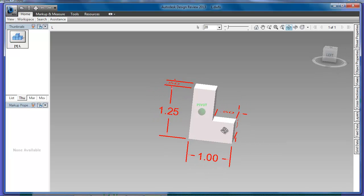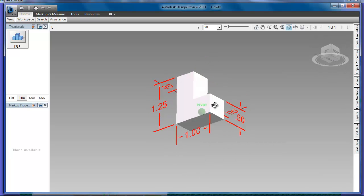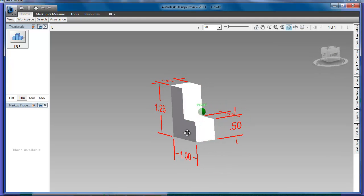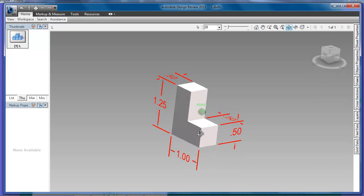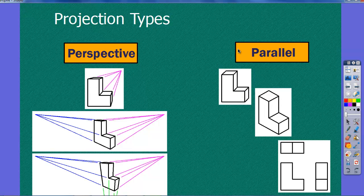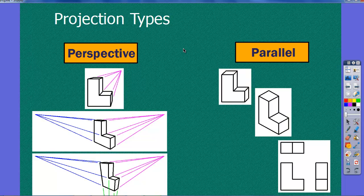So if we take this part that we saw in the last video, how can we represent this on a piece of paper to show to someone else? What are some ways that we can do that? We have two different types of projection. That's what it's called when we're taking a 3D object and drawing it on paper.